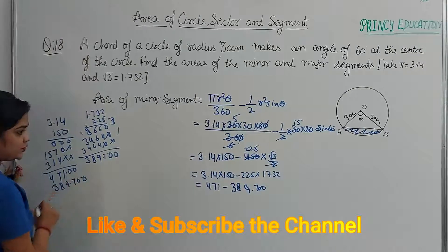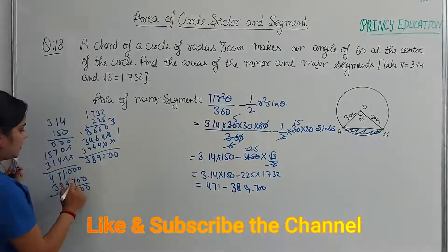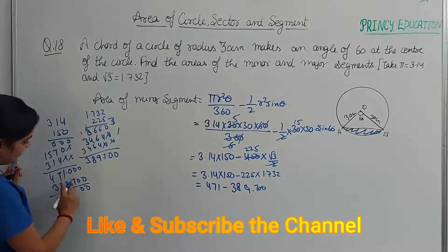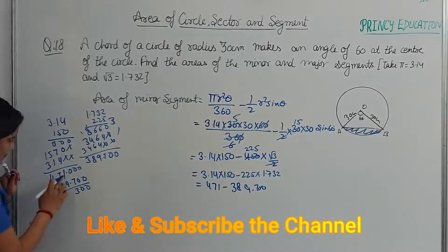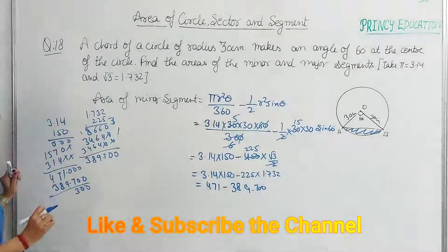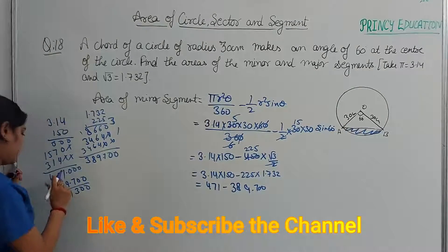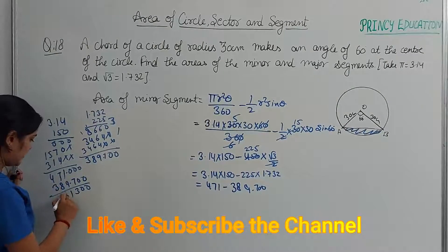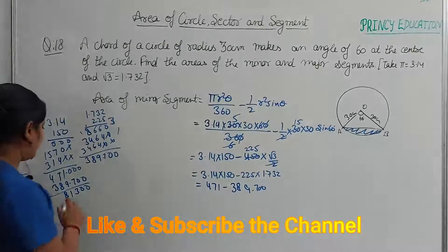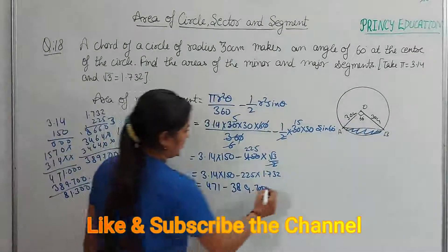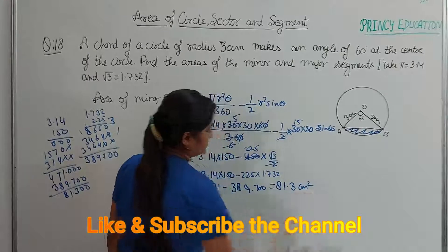Now 471 minus 389.700. Taking carry: 10−7=3, 10−9=1, then 8−8=0, leaving us with the answer 81.3 cm². This is the area of the minor segment.